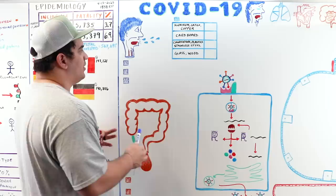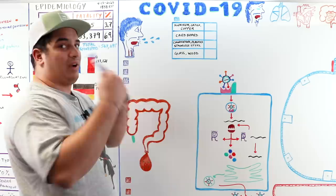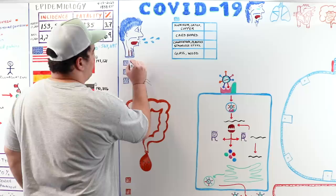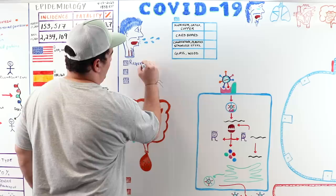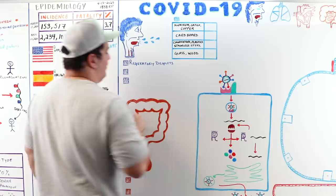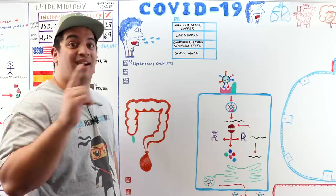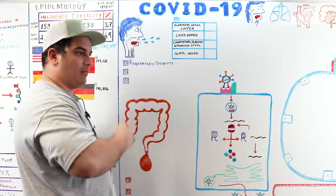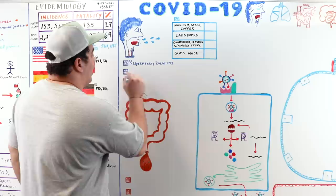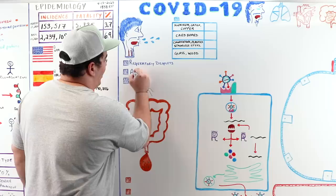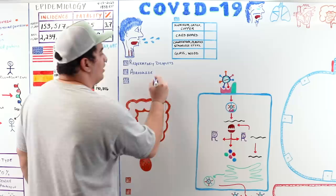Primary transmission is via respiratory droplets from sneezing or coughing, and even direct conversation. Social distancing of greater than six feet is recommended. Research also shows the virus can aerosolize in the environment for up to three hours, and may travel 25 feet or more in under a second.